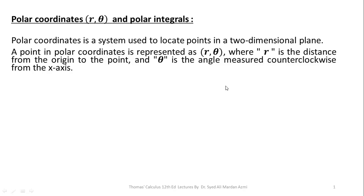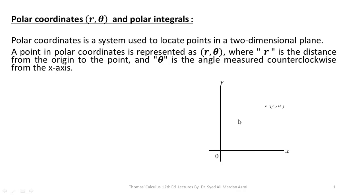We will also learn how we can transform a Cartesian integral into a polar integral. First of all, what is a polar coordinate system? A polar coordinate is a system through which we can locate a point in a two-dimensional plane. A point in polar coordinate is represented by R and theta, where R is the distance of the point from the origin and theta is the angle measured counterclockwise with the positive x-axis.